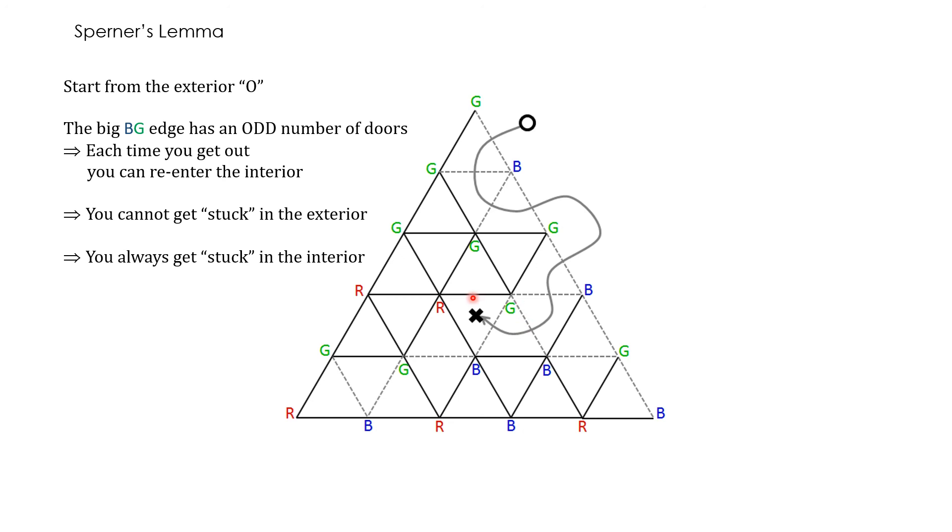Now, consider this triangle, the small triangle where you get stuck. This triangle must be an RGB triangle. Why? Because you entered the triangle through a door, a GB door. And since you cannot exit the triangle, the third vertex has to be an R vertex. Therefore, this is an RGB triangle.